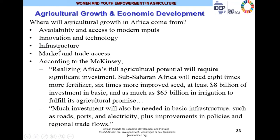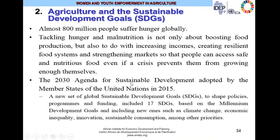Sub-Saharan Africa will need eight times more fertilizer, six times more improved seeds, at least eight billion dollars of investment in basic infrastructure, and as much as $65 billion in irrigation to fulfill the promise of the agricultural sector. Much investment will also be needed in basic infrastructure such as roads, ports, and electricity, plus investments in policies and regional trade flows. This is the fate of the African continent and the fate of the agricultural sector in fulfilling its promise for Africa's economic emergence and transition.